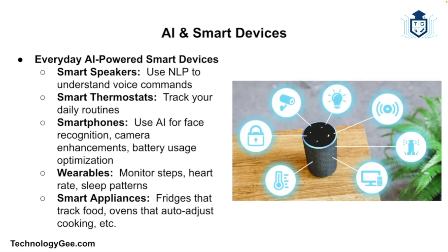Smartphones use AI for face recognition, photo enhancement, battery optimization, and predictive typing. Your smartphone camera uses computer vision to blur backgrounds or detect scenes, and your apps recommend content based on your behavior thanks to machine learning. Wearables like Apple Watch and Fitbit can track steps, heart rate, and sleep patterns, alert you if your heartbeat is irregular, and use AI to detect patterns that even doctors might miss.